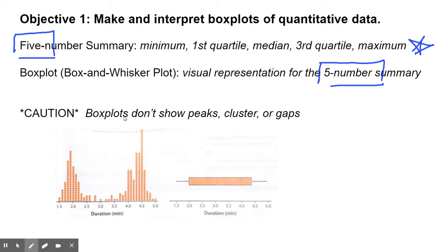One caution: box plots don't show peaks, clusters, or gaps. If you notice here, look at this dot plot of the raw data. Notice that most of your data is on the far ends, and you really have this empty hole in the middle. When you look at a box plot, we like to look at this box as where we think most of the data is. But in reality, most of the data is in these whiskers. It doesn't look that way on the box plot, so be aware and be careful.